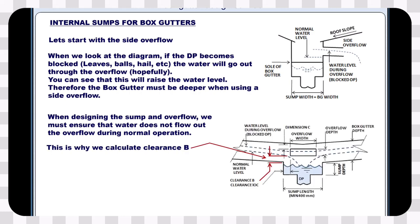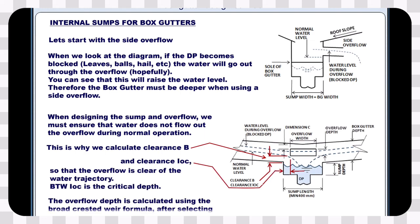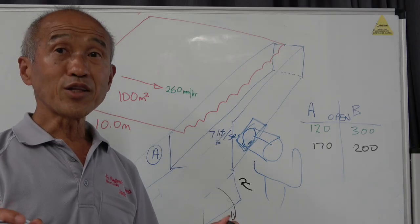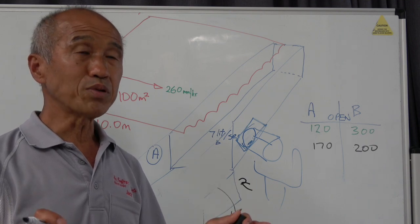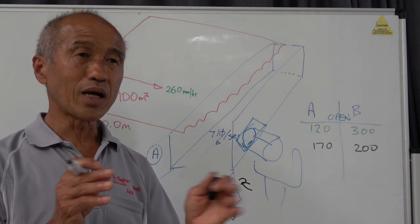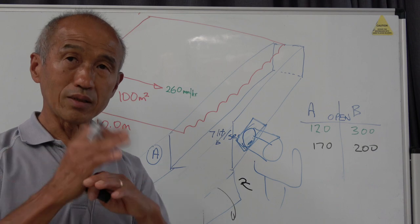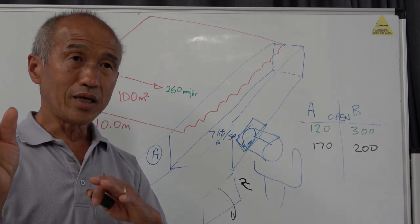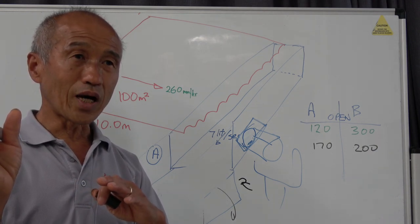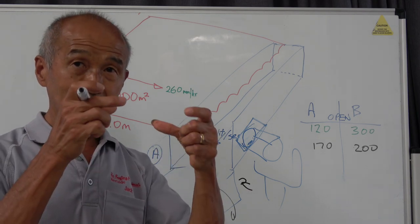And normally they would say you put an overflow at the side so the water can come out when you get a blockage in the downpipes, because you've got downpipes that go down vertically. Now the other option with a sump, if you can't put in an overflow at the side of the box gutter, is you have what they call a high discharge vertical overflow.